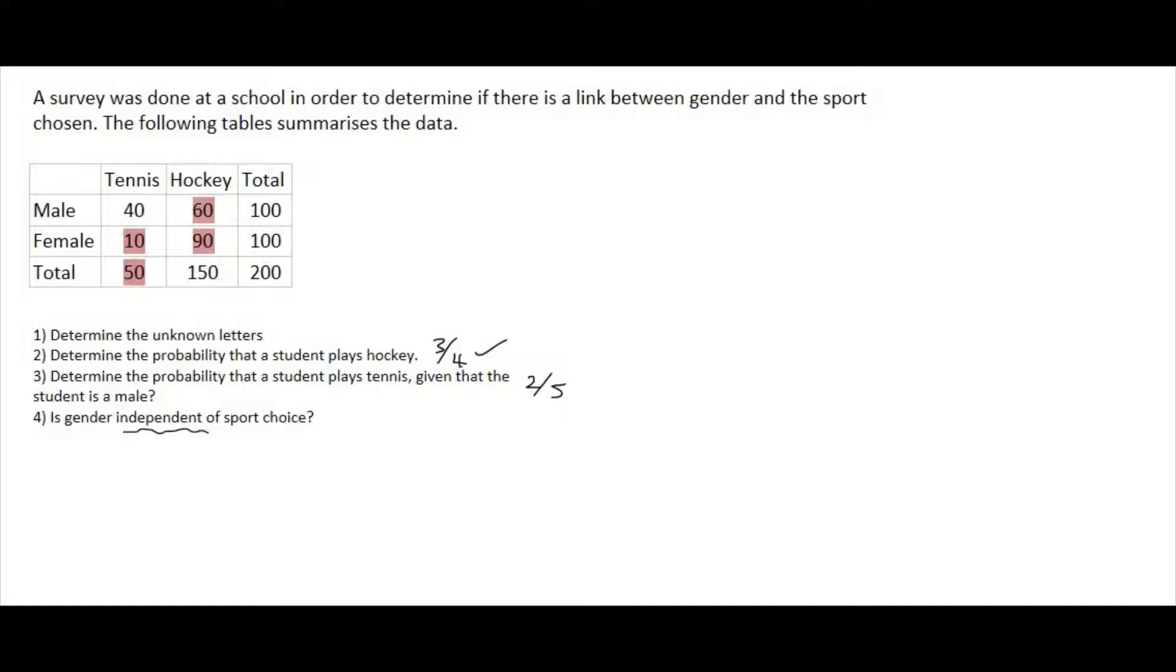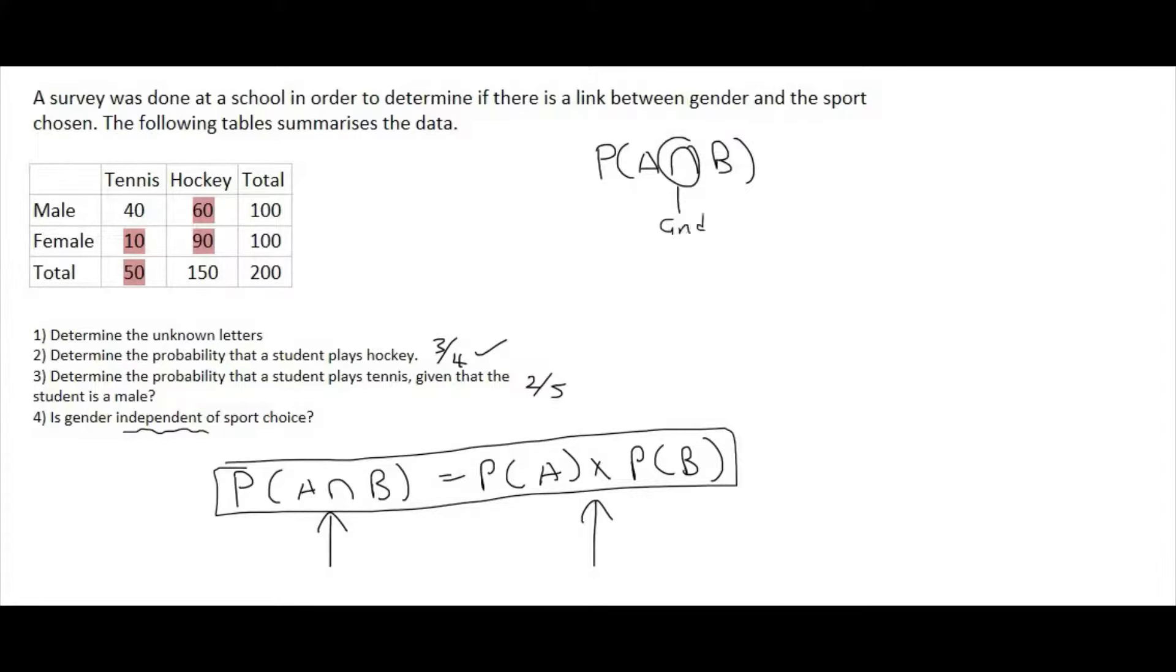So we know from Venn diagrams and from previous videos that the formula for independence goes like this. This is something you just have to remember. They don't give you this on your formula sheet. So this is the independence formula. If the two events are independent, then this side would equal that side. So let's quickly go work out what the P of A and B is. Remember this N stands for and.